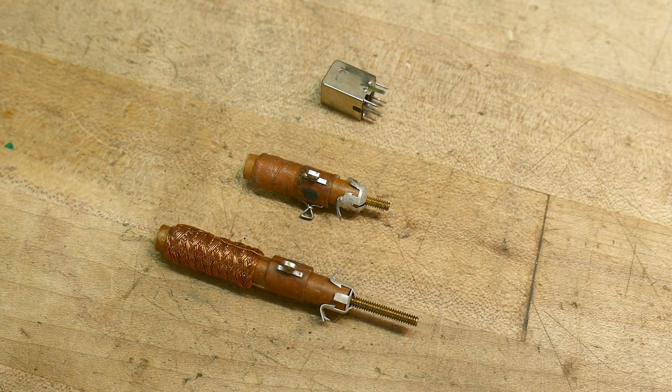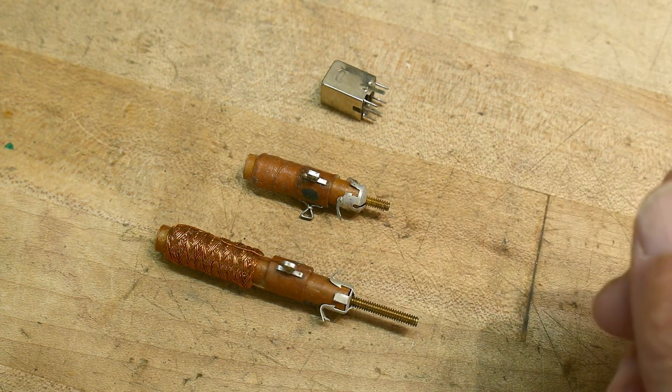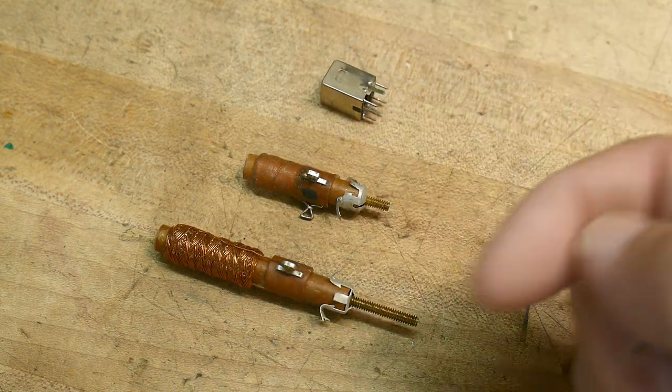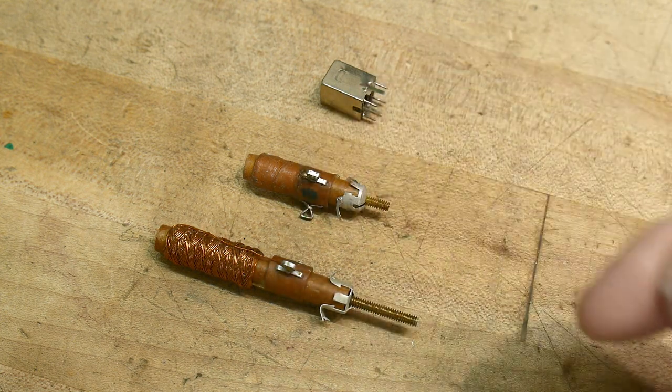So I've showed variable capacitors many times on the channel, but I don't think I've showed variable inductors. I had one antenna match that had a roller inductor. So there was a coil of wire, then there was a roller that moved along the inductor.